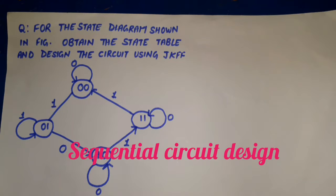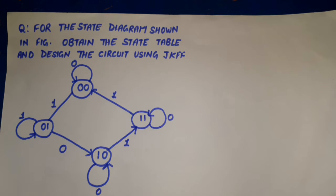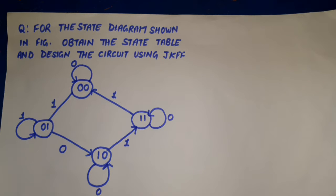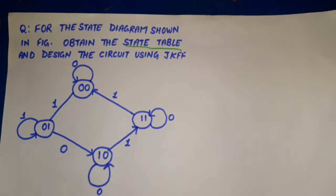Hello everyone. In this lecture I will discuss sequential circuit designing and I have taken an example for explaining this. The question says: for the state diagram shown in the figure, obtain the state table and design the circuit using JK flip-flop. So first we need to obtain the state table, and then draw a sequential circuit using JK flip-flop.